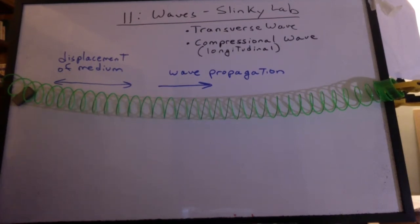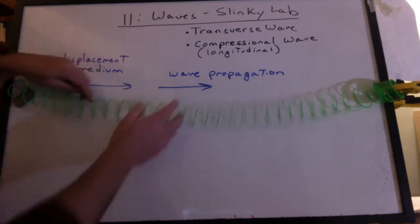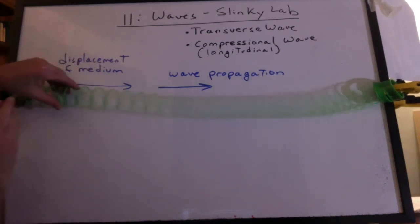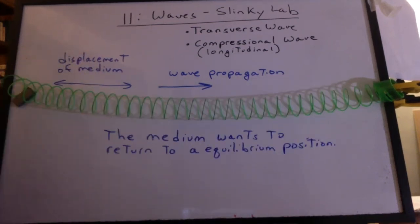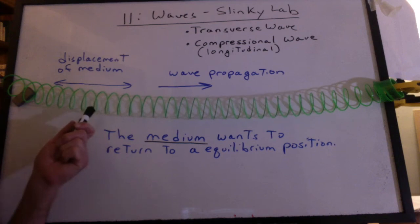In this introductory slinky lab, we use transverse waves. Whether we use a transverse wave or a compressional wave, the medium wants to return to an equilibrium position. What is the medium that carries these waves? It's the slinky itself.